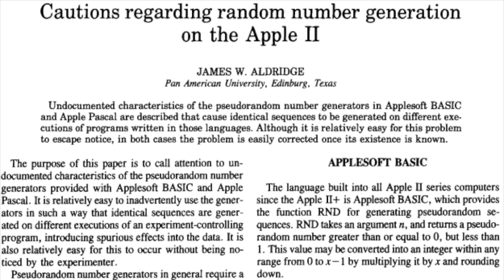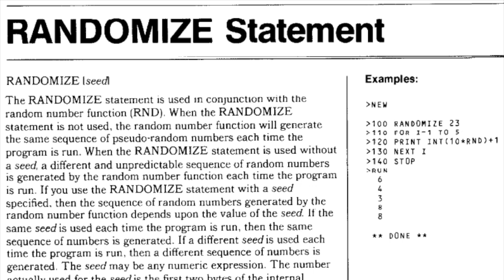Lastly, I had to deal with randomization. Get the Gold contains a randomly generated maze that covers two floors. The Apple II, as well as some other 8-bit computers, weren't that great when it comes to randomization, because identical sequences can be generated on repeated executions.